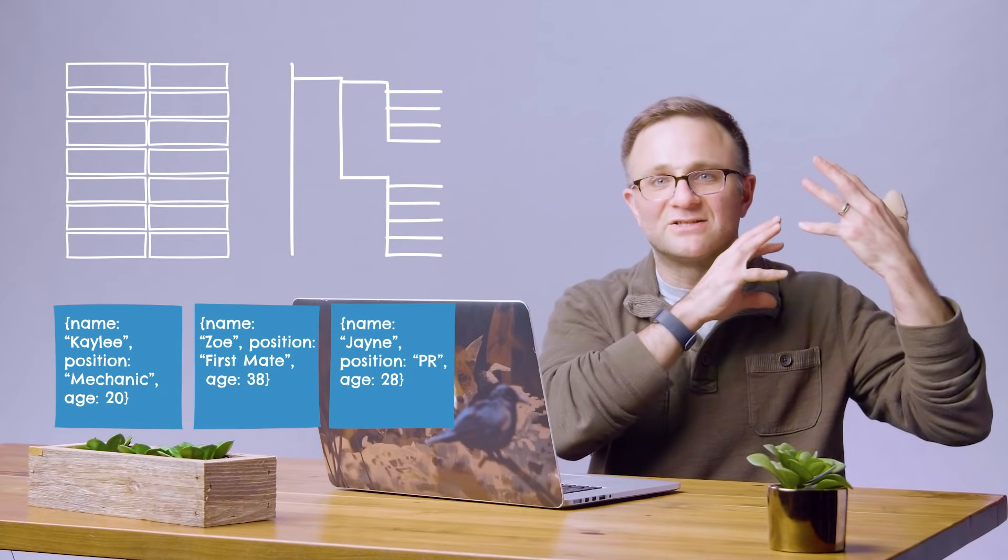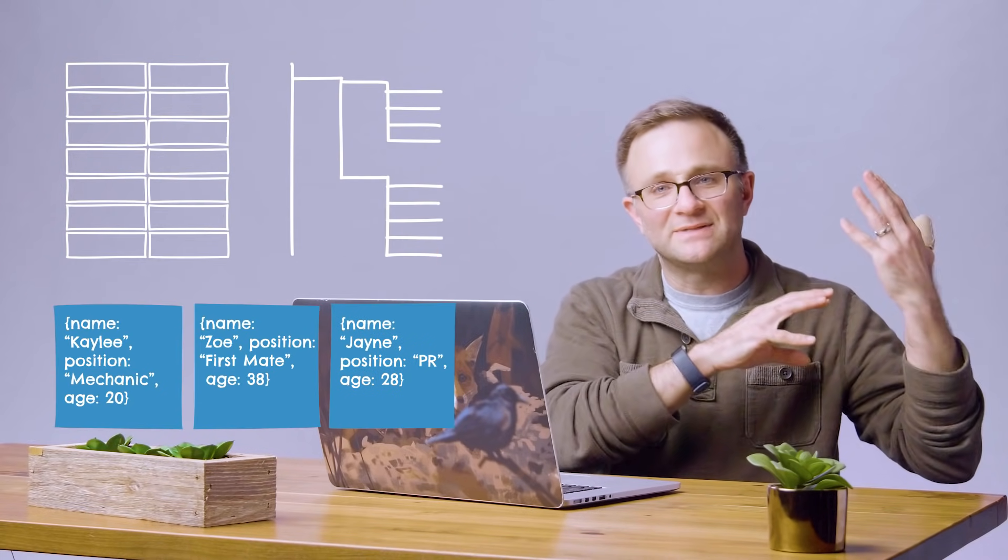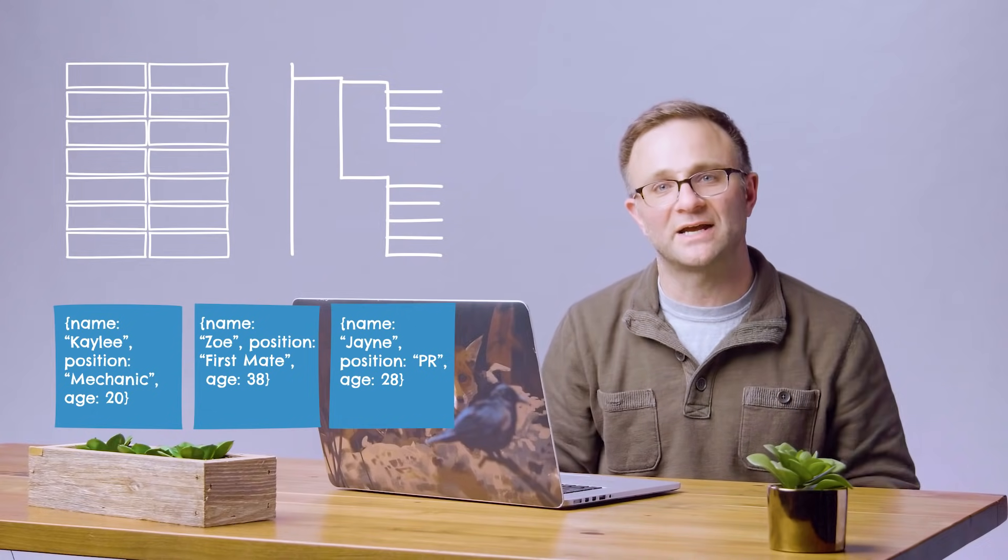Now in the NoSQL world, things are a little different. Generally speaking, all your data is not going to be stored in neat little tables. There are a number of different ways you can store your data — from a plain old key-value store, to a big nested tree like the real-time database, to a collection of JSON objects. But one thing most of them have in common is that NoSQL databases are usually schema-less, which means there aren't any database-level restrictions around what kind of data you can put anywhere.